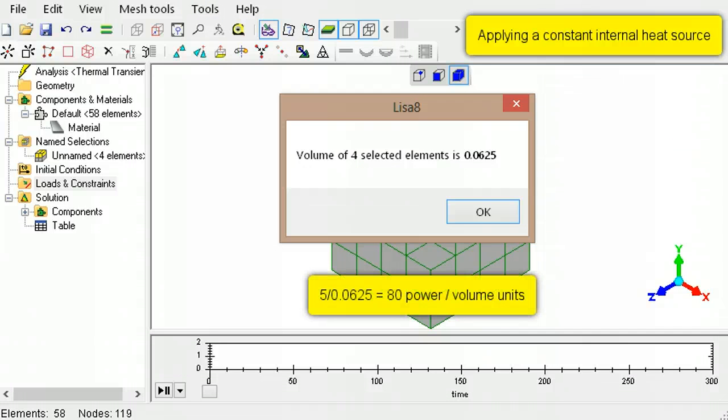Divide the power by this volume, which in this example works out to 80 power units per volume.